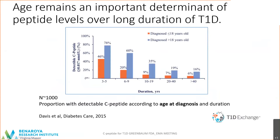Age remains an important determinant of C-peptide levels over the long duration of diabetes. From a study conducted under the auspices of the T1 Exchange, published about six or seven years ago, we looked for whether C-peptide was detectable in almost 1,000 individuals at various times from clinical diagnosis — three to five, six to nine, up to 20, 20 to 40, and more than 40 years after clinical diagnosis. Data separated by age at diagnosis readily shows that those diagnosed as adults had a longer period of time where a greater percentage had detectable C-peptide, compared to the pediatric groups.